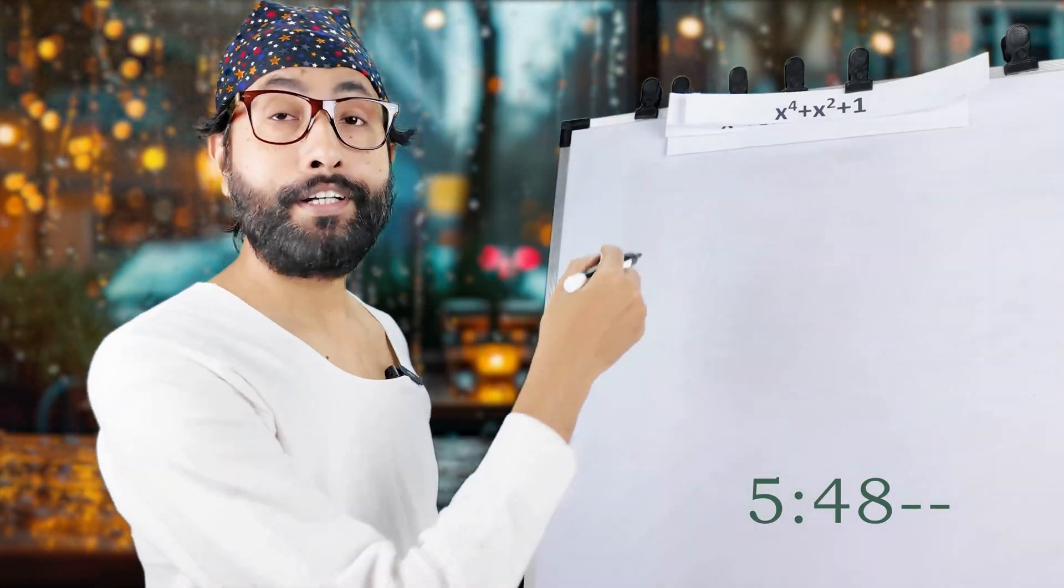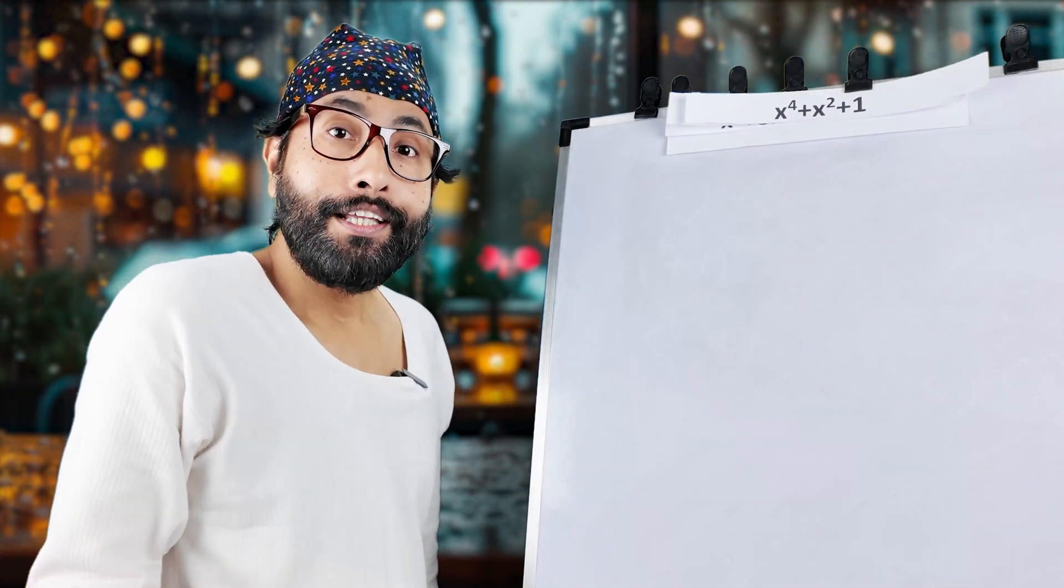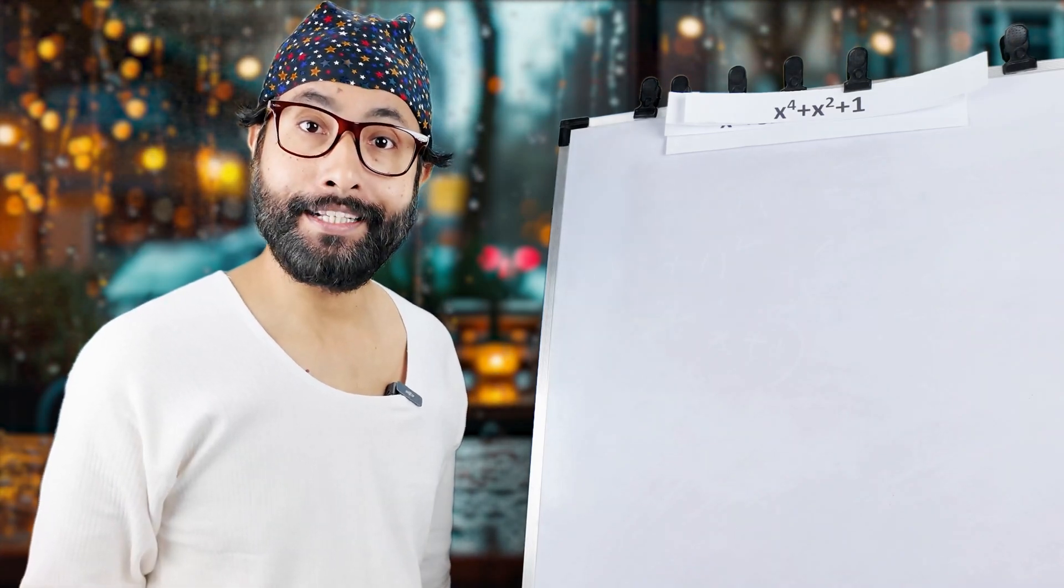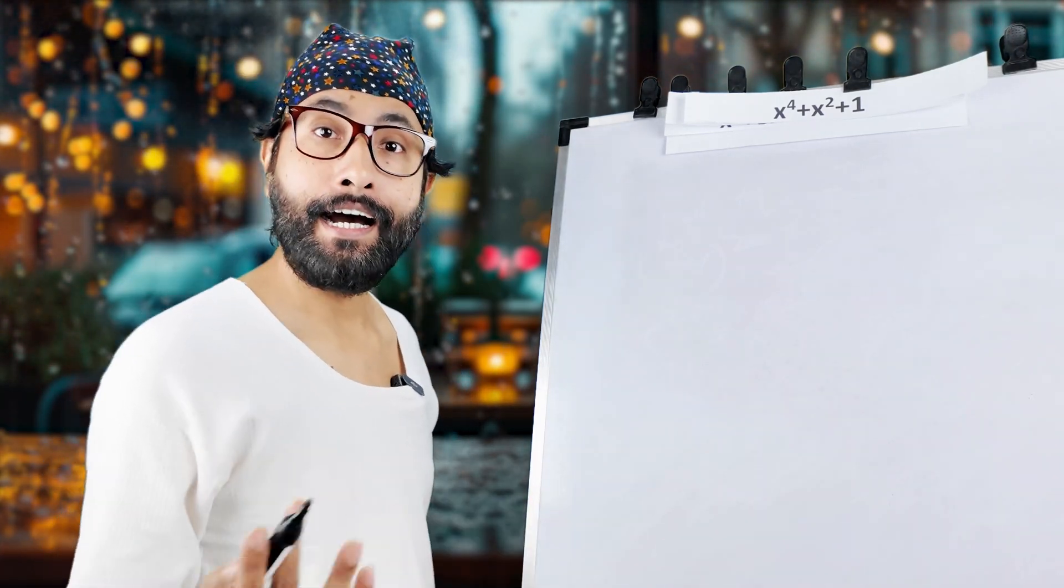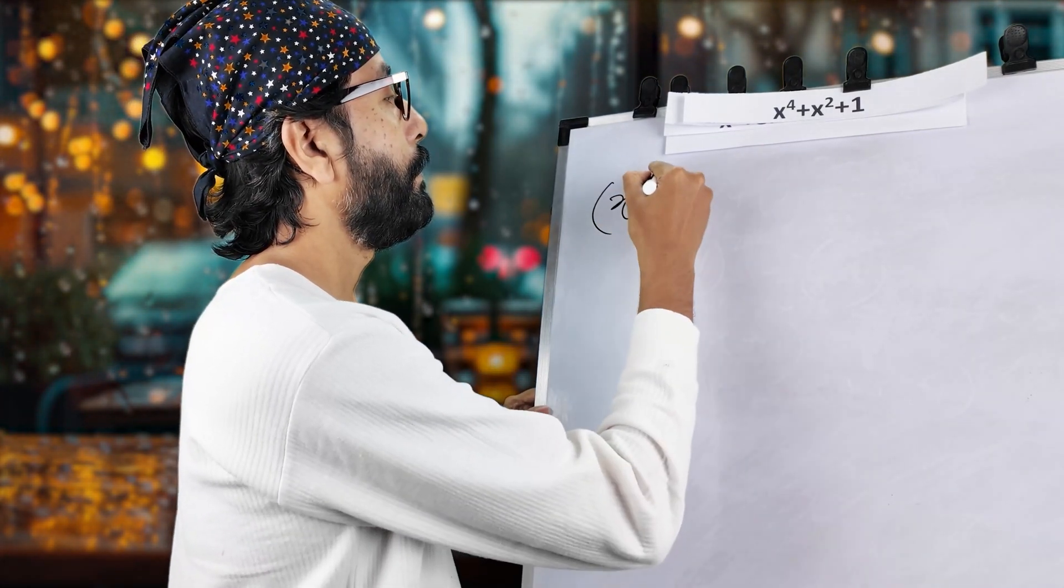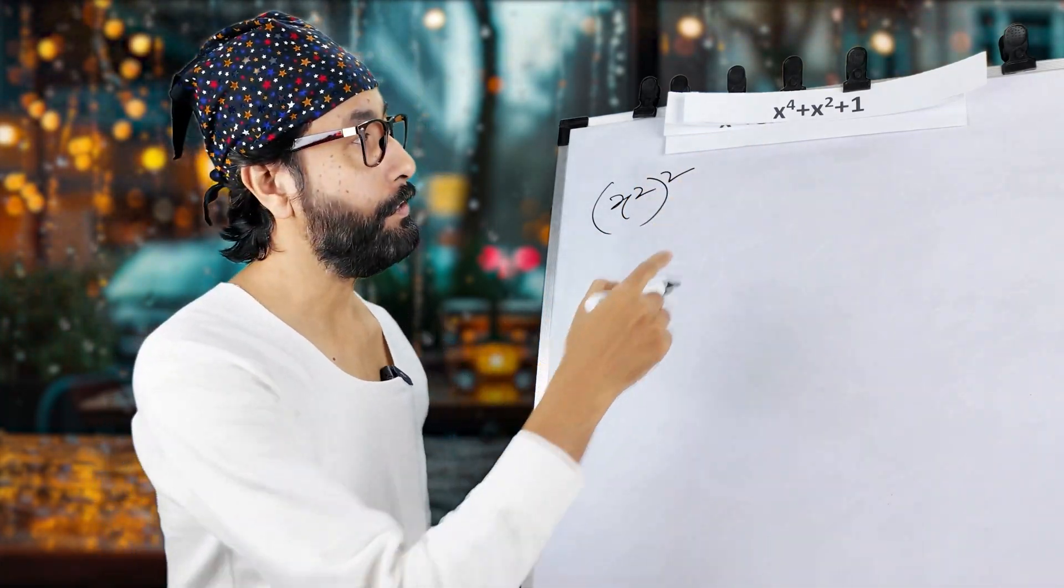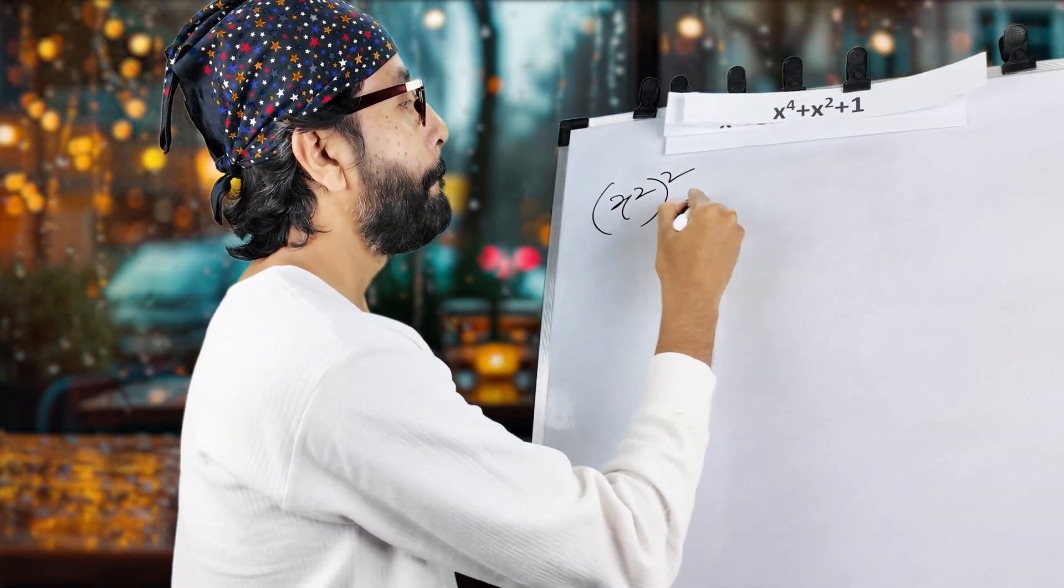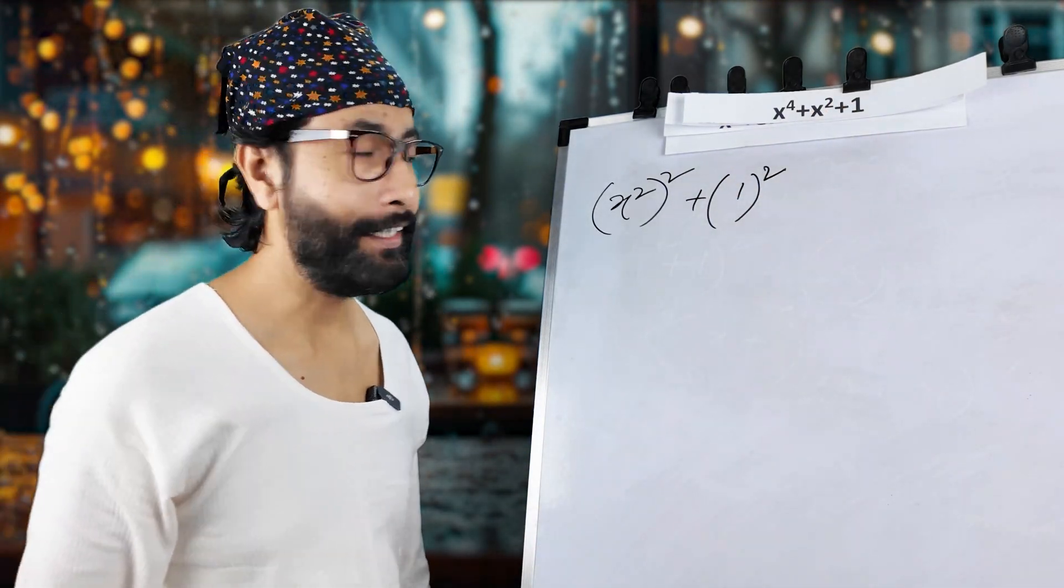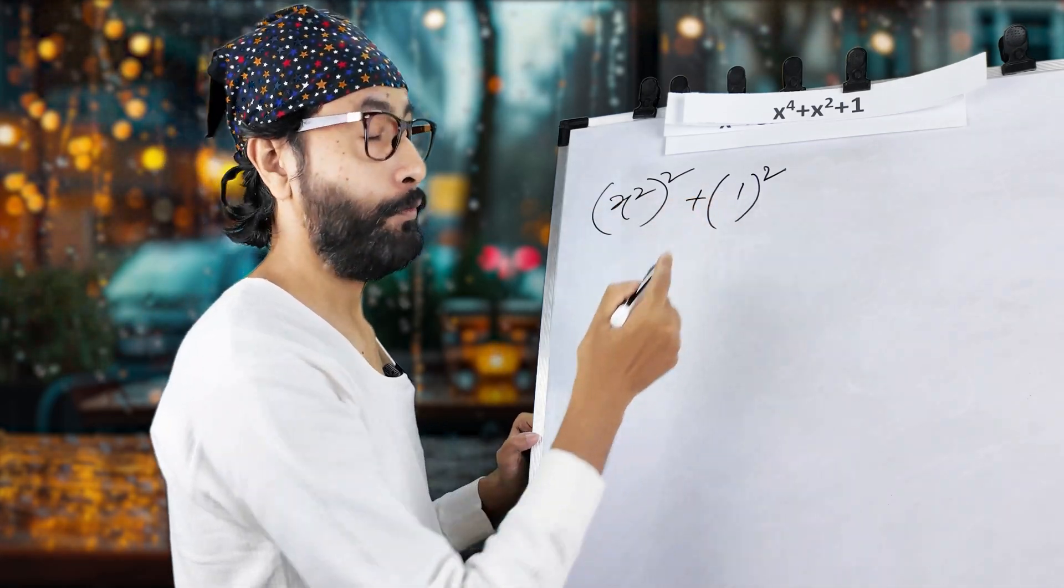Now, this one is not like the previous one. Whenever we get this type of things, we have to land into that formula x square minus y square. That means we have to convert it. How? See, this is x square whole square. That means x to the power 4. Right? The first one. And one square means one.